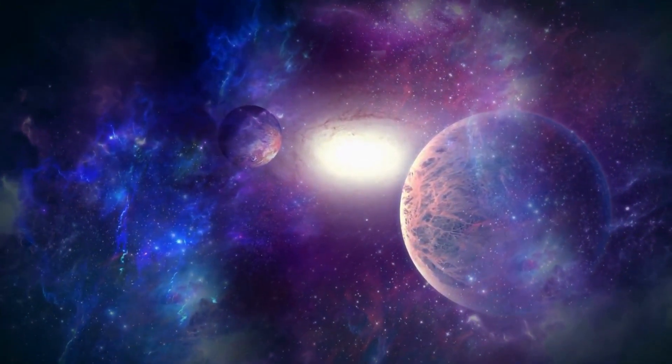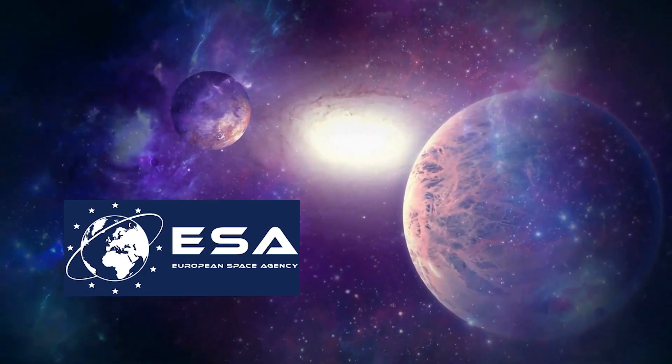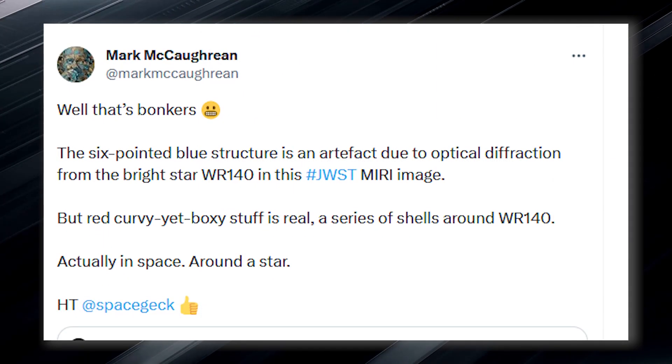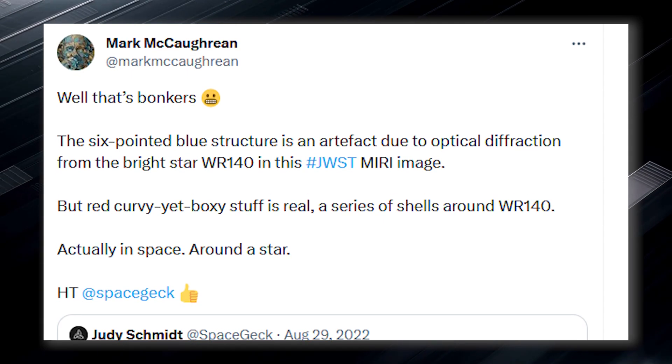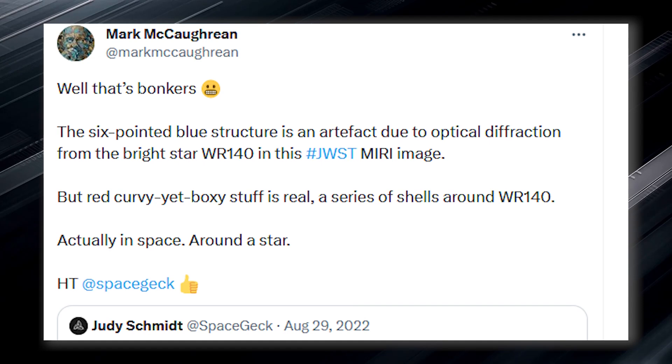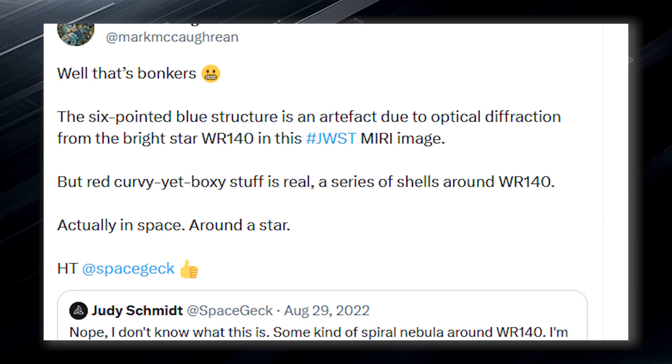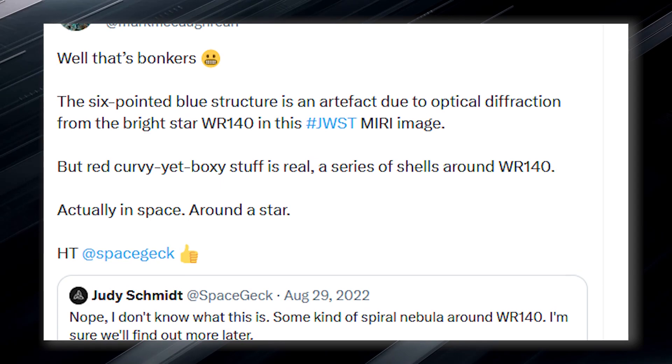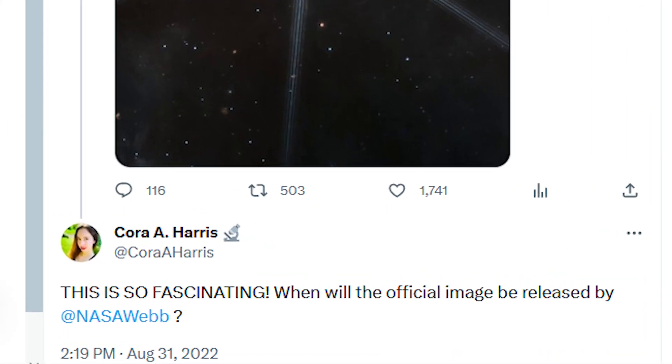Mark, an interdisciplinary scientist with Jake's West Science Working Group and a science advisor to the European Space Agency, called the feature wacky in a Twitter thread. He explained that the six-pointed blue structure is an artifact due to optical diffraction from the bright star WR 140 in the image. However, he noted that the red curvature is real and represents a series of shells around WR 140 in space. Although NASA is expected to have something to say about this, it is expected to make a statement soon.